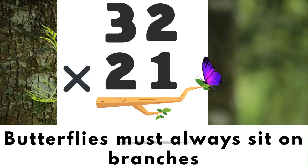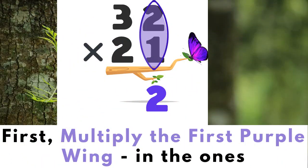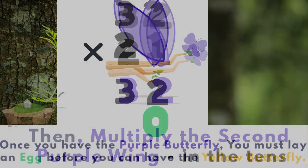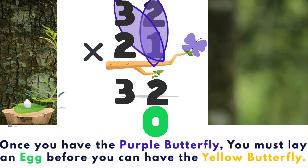Butterflies must always sit on branches. First, multiply the first purple wing in the ones place — two times one, that's two. Then, multiply the second purple wing in the tens place: three times one equals three. Once you have the purple butterfly, you must lay an egg before you can have the yellow butterfly, so go right ahead and add a zero in the ones place.